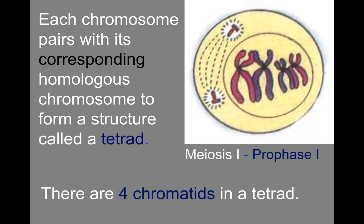Each chromosome pairs with the corresponding homologous chromosome, and this is called a tetrad. Homologous chromosomes are same size, same shape, and contain similar information. This structure here is called a tetrad — we have one, two, three, four chromatids. Tetra means four. There are two tetrads in this picture. This is important for prophase one because we're about to talk about something called crossing over, which is a really significant event in meiosis that occurs during prophase one.